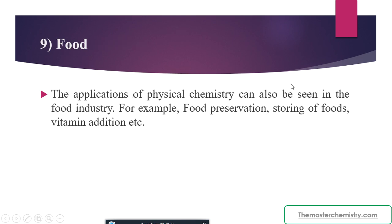Physical chemistry also has applications in the food industry, helping humans develop materials to preserve food — a revolutionary step. There are many applications for preserving and storing different types of foods, as well as developing preservatives to prevent spoilage, such as adding vitamin C, which acts as an antioxidant preventing the chemical changes that cause food to go off.